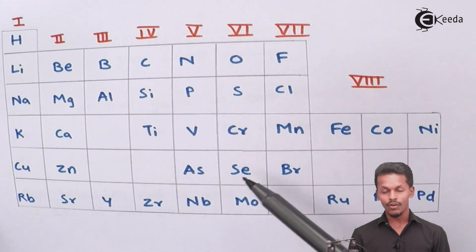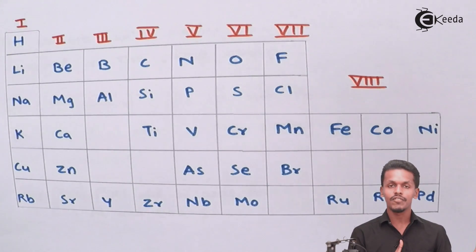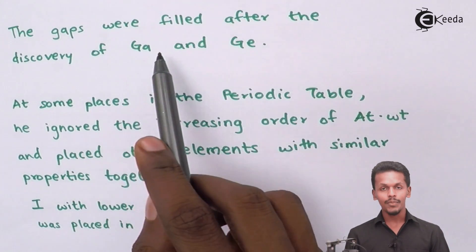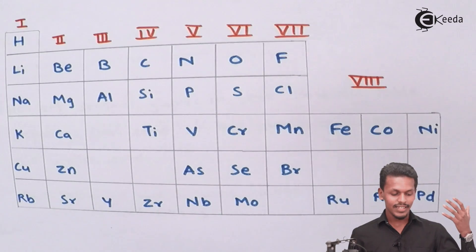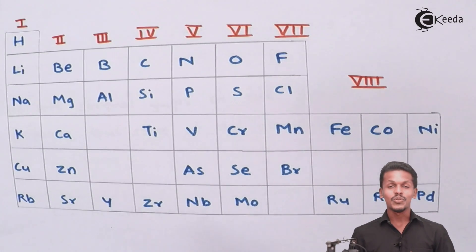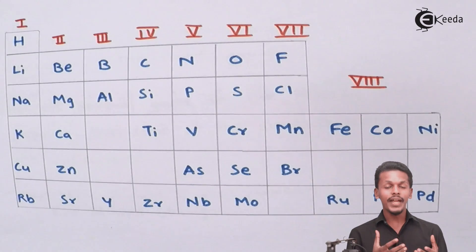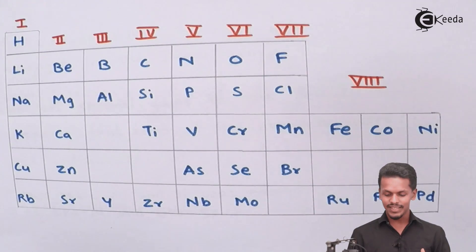These gaps that were not filled when Mendeleev's periodic table was made were later filled after the discovery of gallium and germanium. The space below aluminium and silicon was occupied by gallium and germanium respectively. This prediction was a great achievement and demonstrated how Mendeleev made a landmark announcement in classifying elements — his prediction made him famous and contributed to the modern periodic table as we know it today.